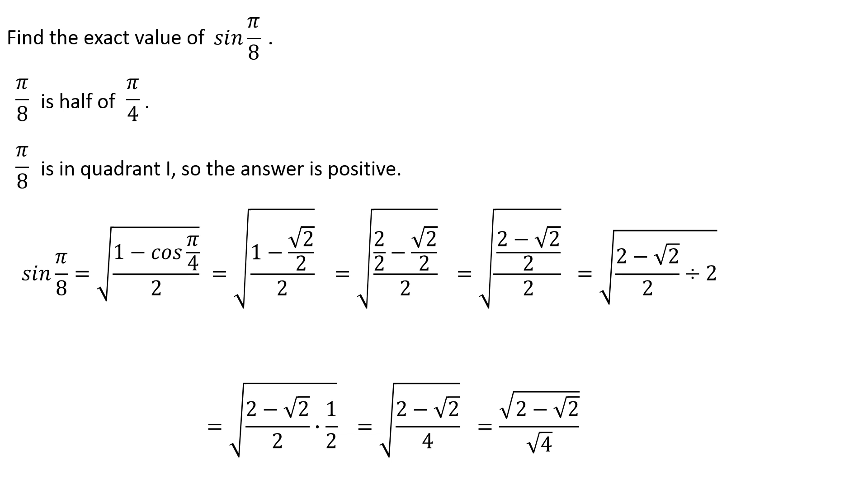Of course, I can break this up and say I've got the square root of the numerator over the square root of the denominator. Of course, in the denominator, square root of 4 is just 2. And again, notice I did not put the plus or minus out in front. We knew it was quadrant number 1. We knew it therefore had to be positive. So I don't need a symbol out in front. I just have square root of the quantity 2 minus root 2 over 2. That is the exact value for sine of π over 8.